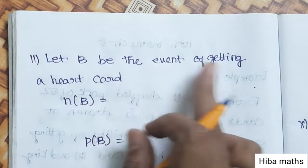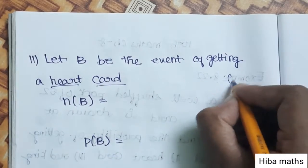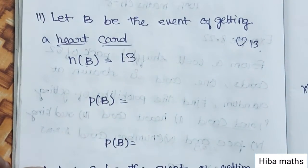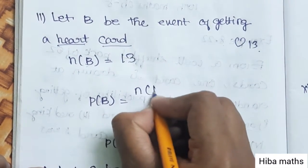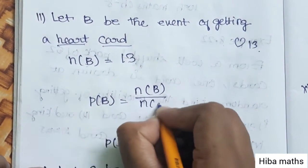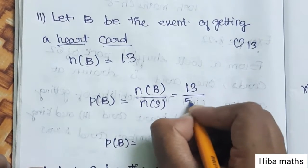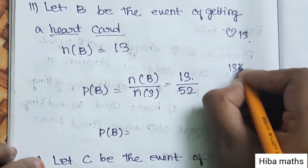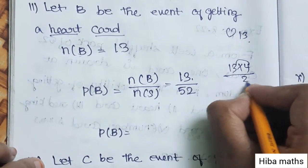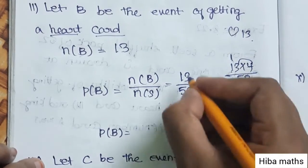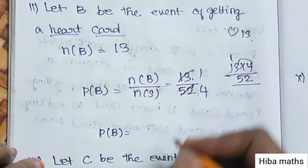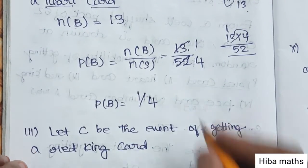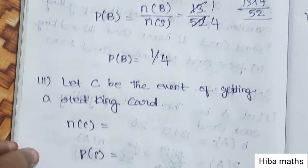Second subdivision: Let B be the event of getting a heart card. We have 13 heart cards, so N of B is 13. P of B equals N of B by N of S, that is 13 by 52. Simplifying: 13 divided by 52 equals 1 by 4. The calculations are very easy.